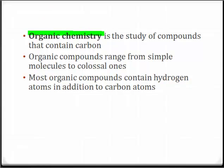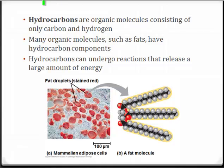Organic chemistry is the study of compounds that contain carbon. These organic compounds range from small, simple molecules to enormous ones. Most organic compounds contain hydrogen in addition to the carbon atoms. Hydrocarbons are organic molecules consisting of only carbon and hydrogen. Many important biological molecules, such as fats, have hydrocarbon components. They can undergo reactions that release a large amount of energy. This is why, gram for gram, fat contains more calories than any other complex carbon compound.